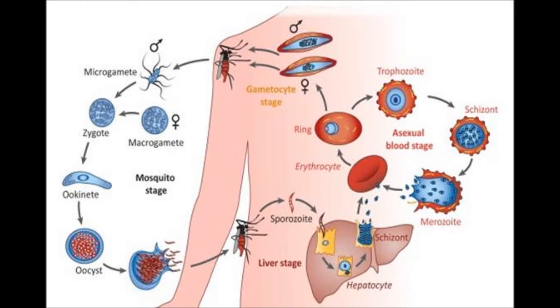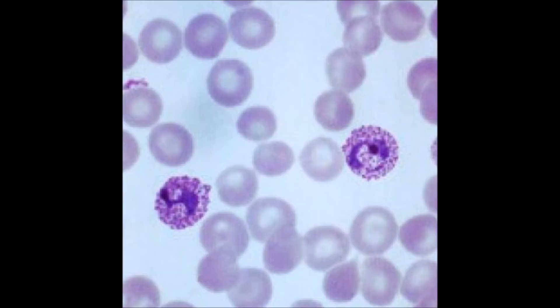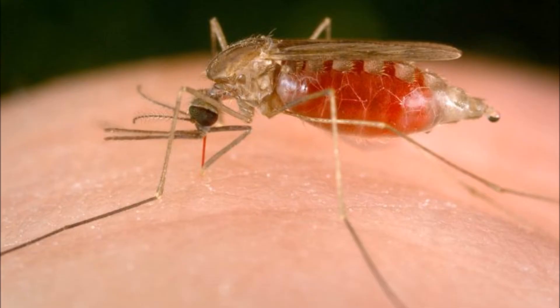The zygote becomes a worm-like ookinete which penetrates the wall of the stomach and forms an oocyst. The oocyst produces sporozoites which are released into the haemocoel of the mosquito and reach the salivary gland, making the mosquito infective.